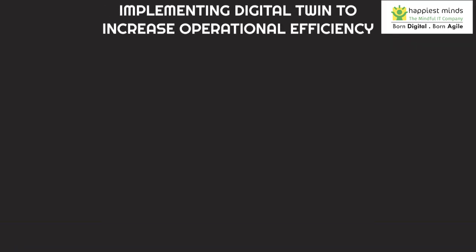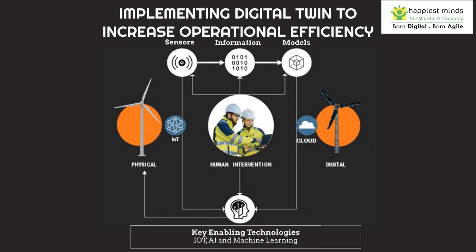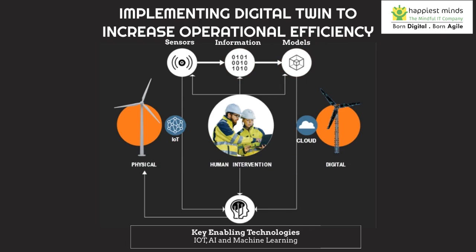Implementing Digital Twin to increase operational efficiency involves the following steps. Sensors will detect the type, location, and size of damage in different sub-components, such as load-carrying spar caps, webs, and surface panels. Information processing involves the translation of physical data into a digital representation. Models are damage prediction models that AI enables. Human intervention is sometimes needed to oversee AI-based decision-making.